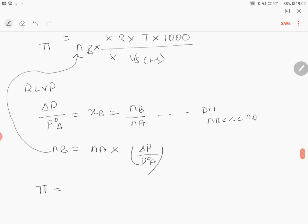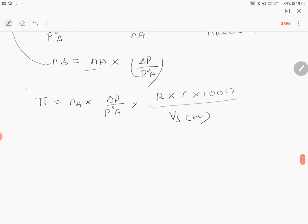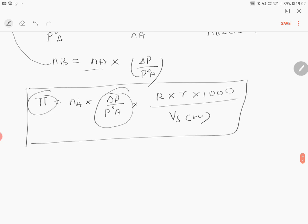So what is relative lowering of vapor pressure? NB is NA into delta P by P naught A, into R into T into 1000 divided by volume of the solution in L. Now you have got a beautiful expression relating osmotic pressure and relative lowering of vapor pressure.